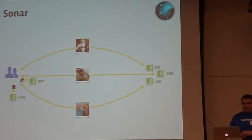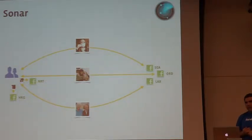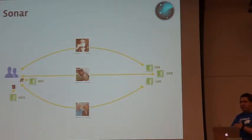Q: Do you keep your TTL low, just in case you have congestion at Chicago, so it quickly reverts? Or if it's cached, does it keep going to Chicago? A: We usually shift traffic every five minutes. So if we notice Chicago is overloaded, we shift traffic away from Chicago within the next five minutes.